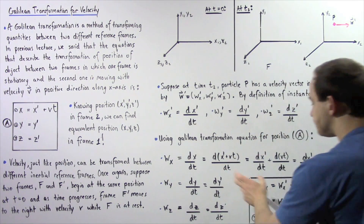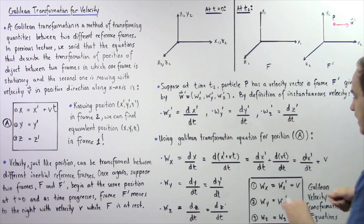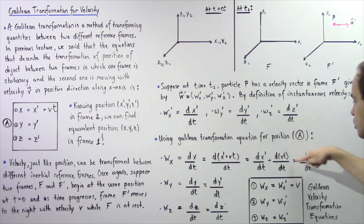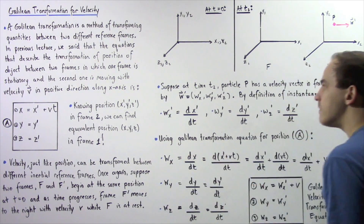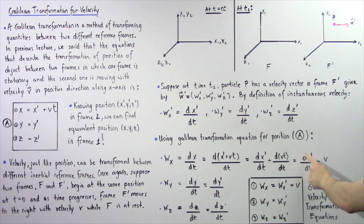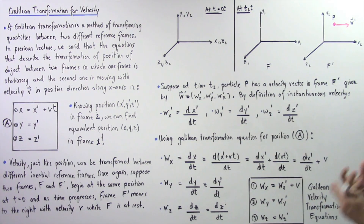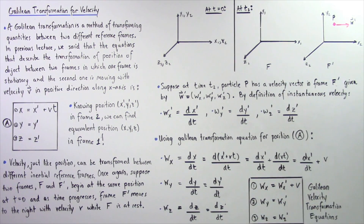Distributing the derivative in the x-equation gives dx prime over dt plus d(vt) over dt. Since v is constant, the t cancels and we are simply left with v. Therefore, w x — the velocity of the particle within frame f along the x-axis — equals dx prime over dt plus v. These three equations give us the velocity of particle p within frame f, and they are known as the Galilean velocity transformation equations.